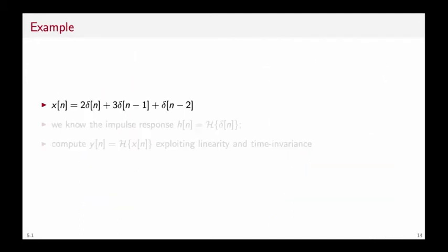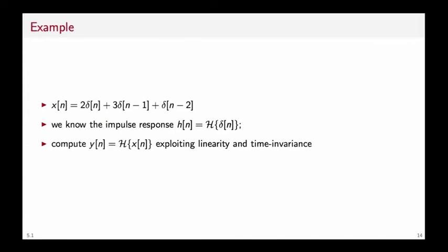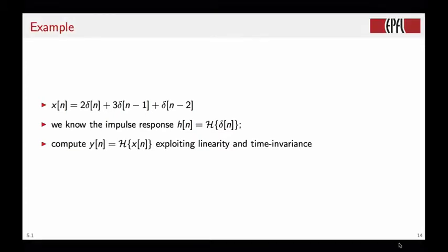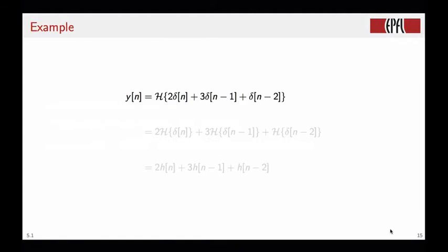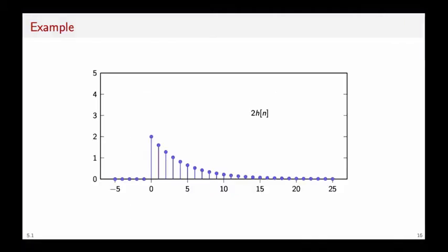So we can always write our sequence as a linear combination of delayed delta functions. So in particular, for our example, x of n is equal to 2 times delta of n plus 3 times delta of n minus 1 plus delta of n minus 2. Now we know the impulse response, so the response to the delta, and by exploiting linearity and time invariance, we can compute the response of the system to the input sequence x of n just by knowing the impulse response. Indeed, we apply the linear filter to the linear combination of deltas, and by exploiting linearity first, we can split the operation of the filter over the three components of the signal, and by exploiting time invariance, we just sum together appropriately scaled versions of the impulse response delayed.